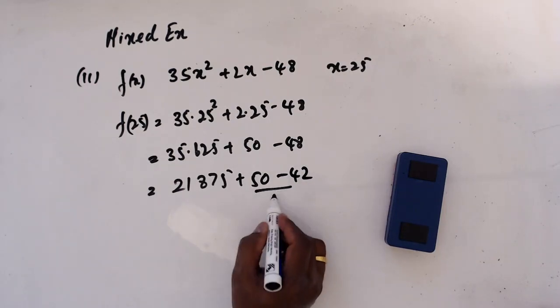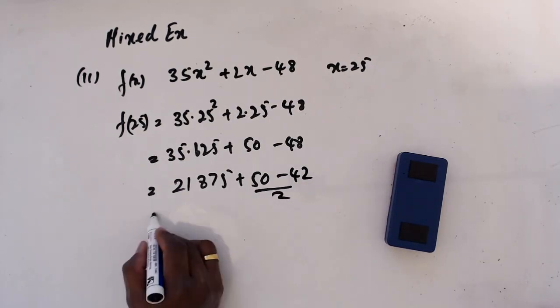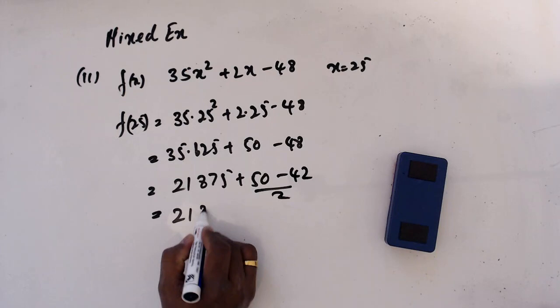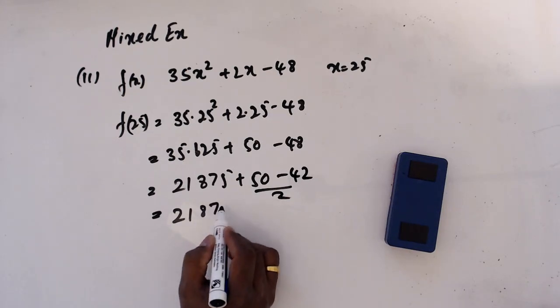So the difference gives us 2 to add here, resulting in 21,877.